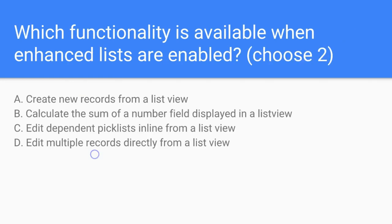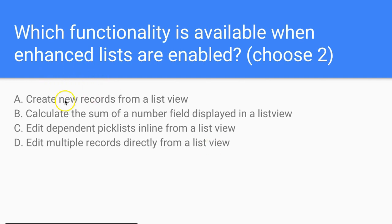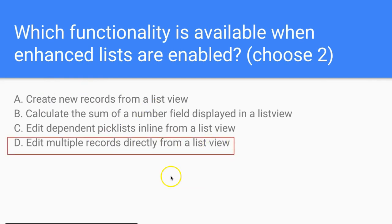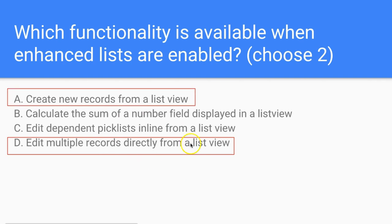Question: Which functionality is available when enhanced lists are enabled? Choose two. A: Create new records from a list view. B: Calculate the sum of a number field displayed in a list view. C: Edit dependent pick lists inline from a list view. D: Edit multiple records from a list view. The correct answers are A and D — you can create new records from a list view and edit multiple records from a list view, as demonstrated by the pencil icon and top-level edit functionality.